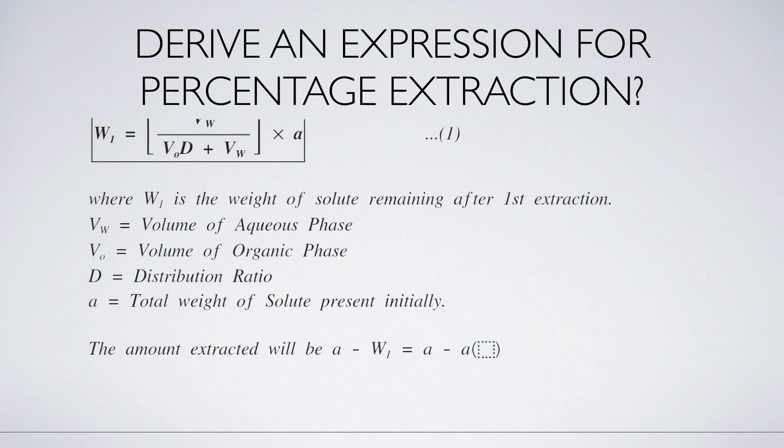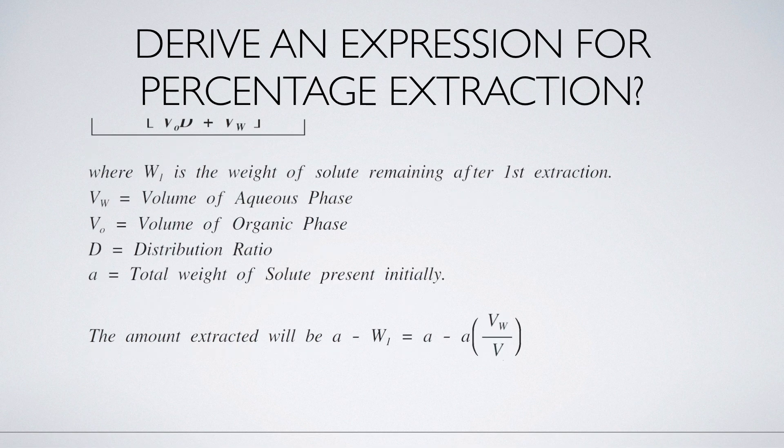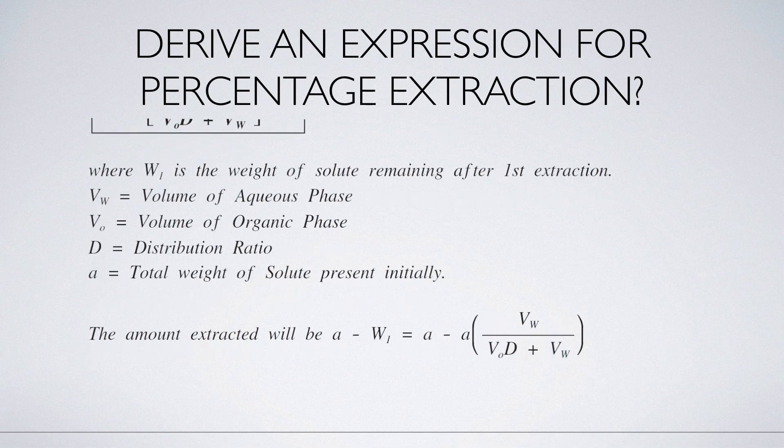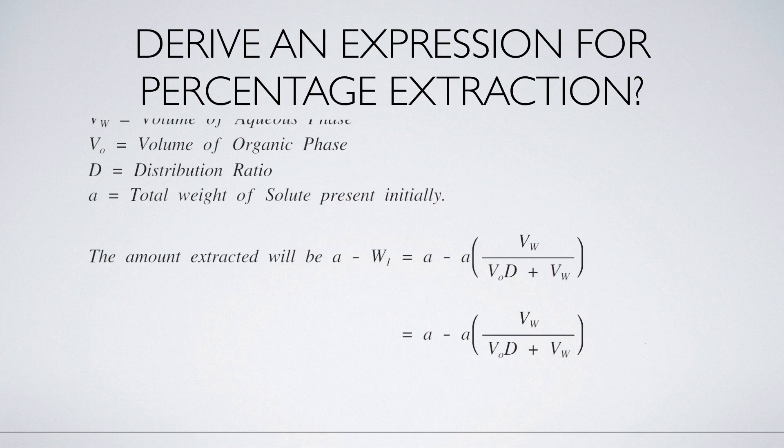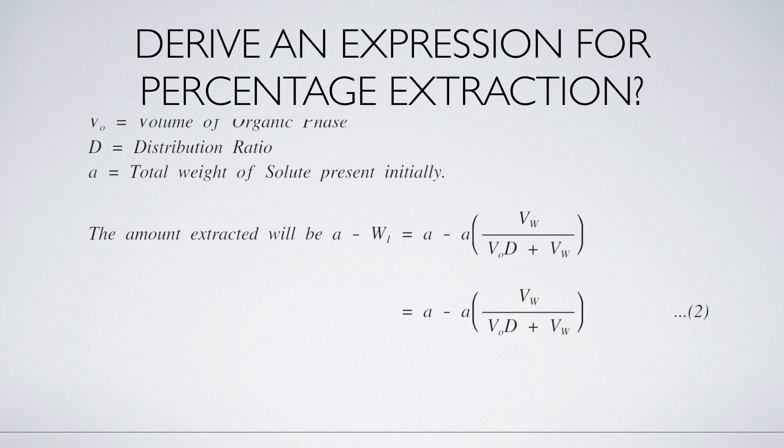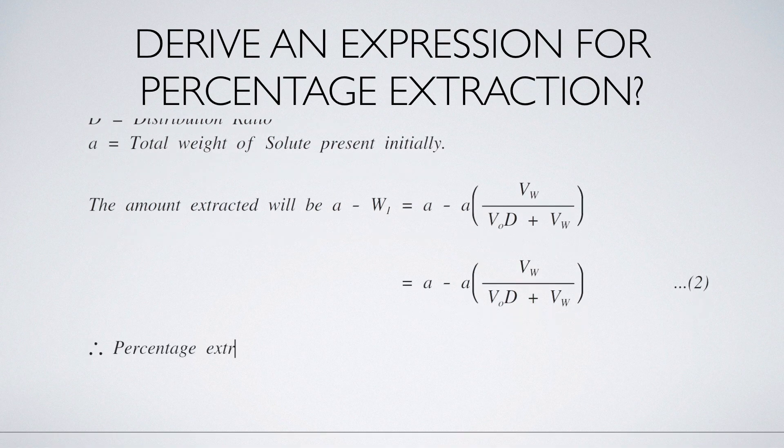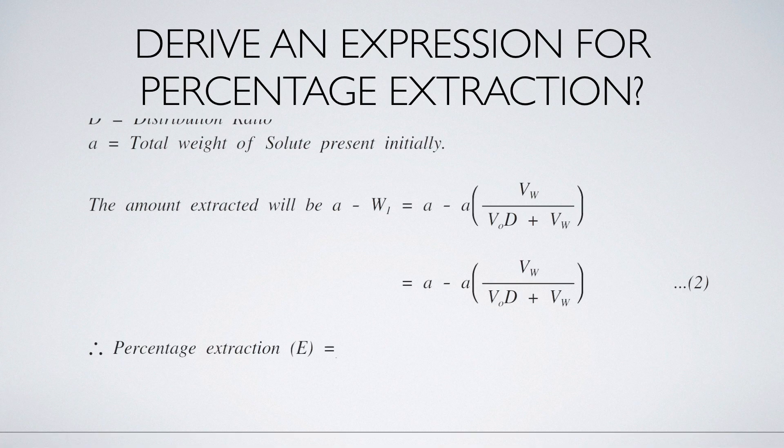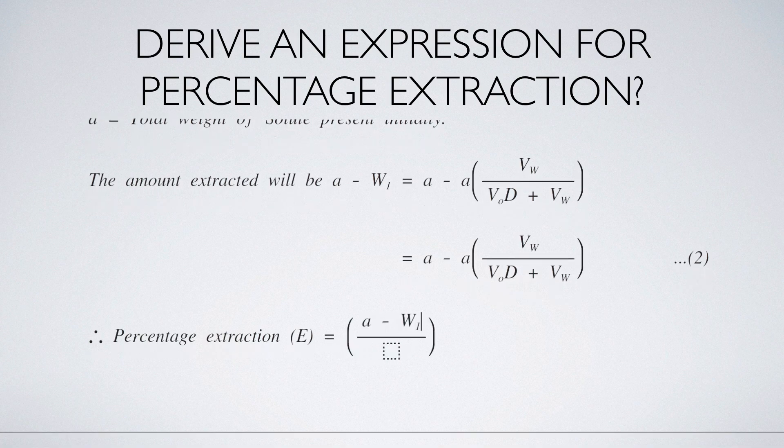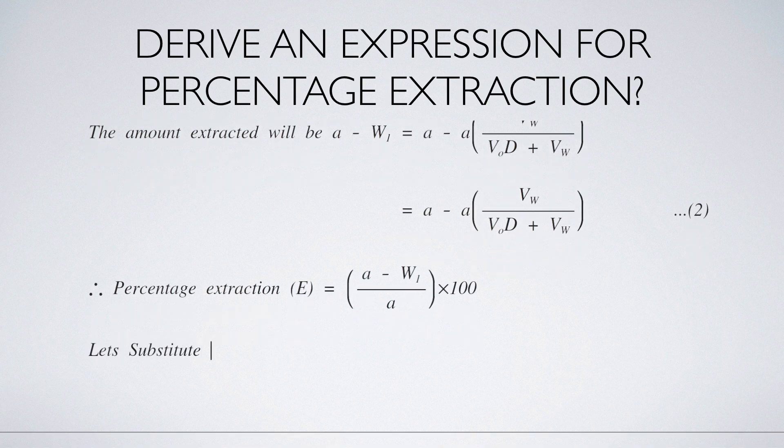So this becomes A minus A VW divided by VOD plus VW. Therefore, the percentage extraction E equals the amount extracted A minus W1 divided by total amount into 100. Let's substitute the values from equation number 2.